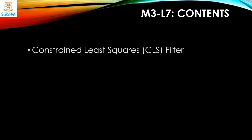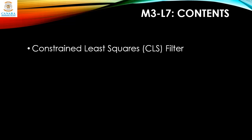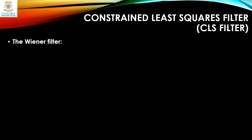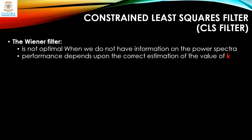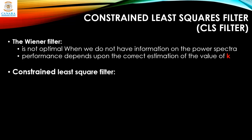Welcome back everyone. In this lecture we'll learn about the Constrained Least Squares filter, also known as the CLS filter. As we studied in the previous lecture, the Wiener filter is not optimal when we do not have information on the power spectrum, and its performance depends on the correct estimation of k. In contrast, the CLS filter does not make any assumption about the original undegraded image; it makes use of only the mean and variance of the noise.